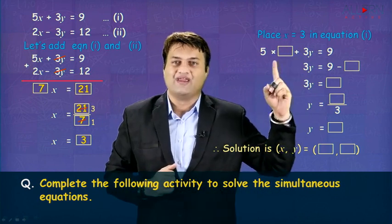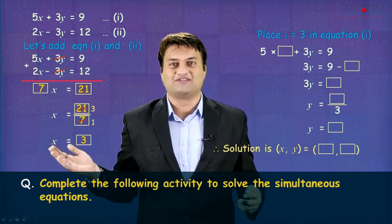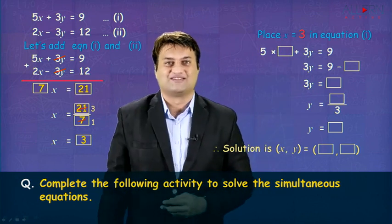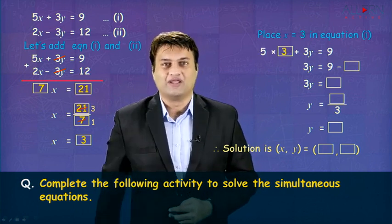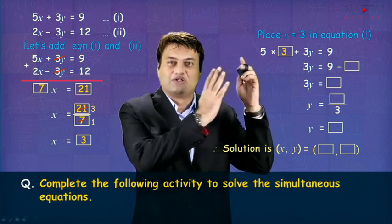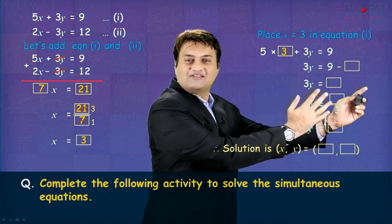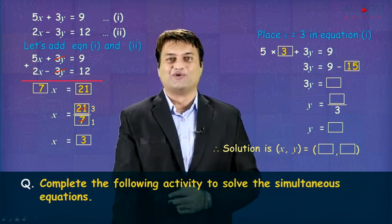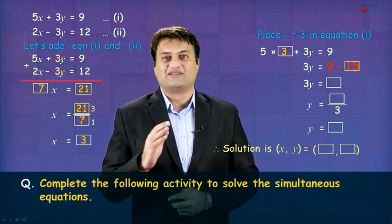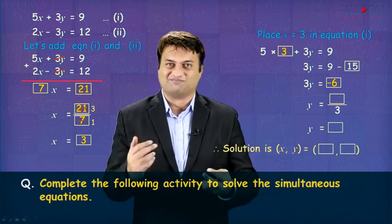You get 5 into x, now in the place of x, you need to substitute the value, that's 3. So you get 5 into 3 plus 3y is equal to 9. 5 into 3 is 15. Now this 15 goes to the other side, it becomes minus 15. So you get 3y is equal to 9 minus 15. You get 3y is equal to minus 6.